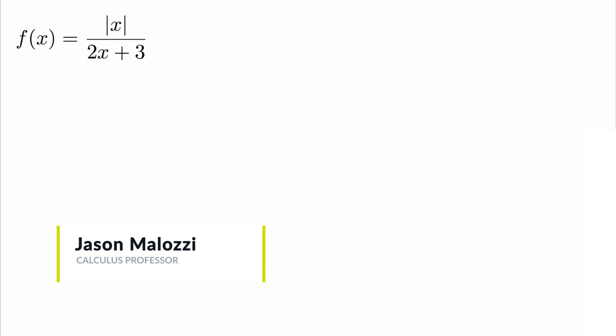Hello there, good to see you. What we're going to do in this video is consider the function f(x) equals the absolute value of x divided by 2x plus 3, and we're going to find the equations of the horizontal asymptotes.